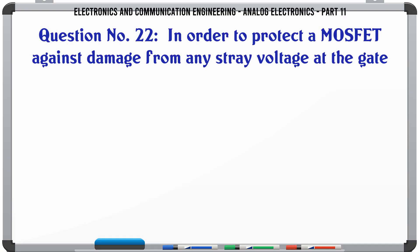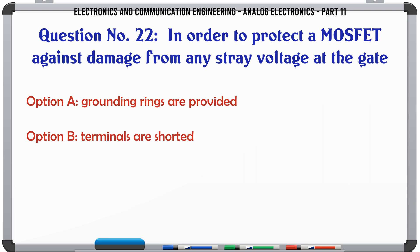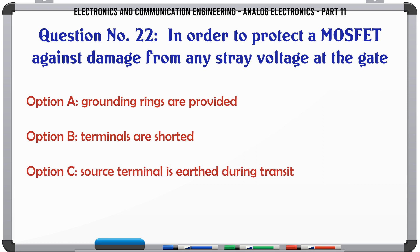In order to protect a MOSFET against damage from any stray voltage at the gate. A. Grounding rings are provided. B. Terminals are shorted. C. Source terminal is earthed during transit. D. None of these. The correct answer is provided.